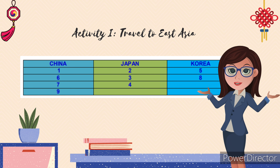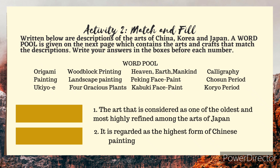You are really smart! I am sure you will enjoy your tour of China, Japan, and Korea as you move on to another pre-assessment activity. Good luck! Activity 2: Match and fill. Written below are descriptions of the arts of China, Korea, and Japan. A word pool is given on the next page which contains the arts and crafts that match the descriptions. Write your answers in the boxes before each number.